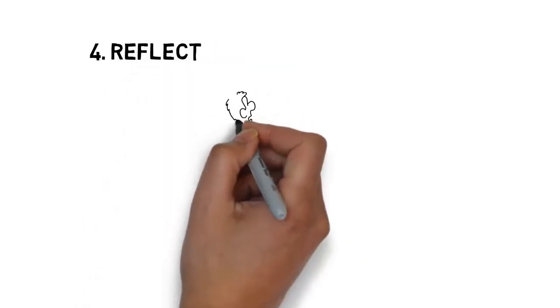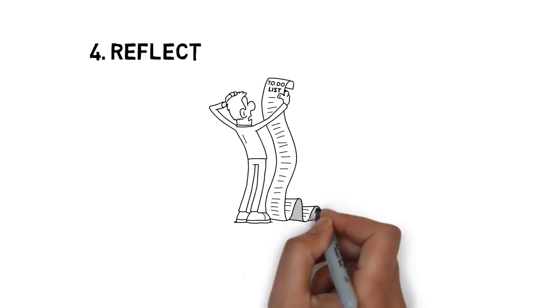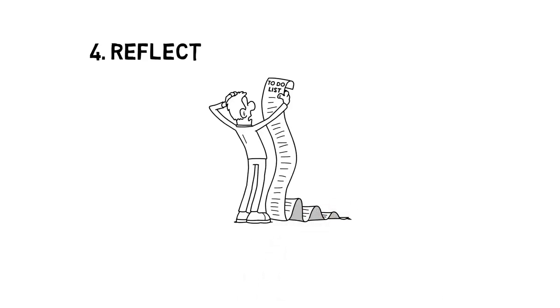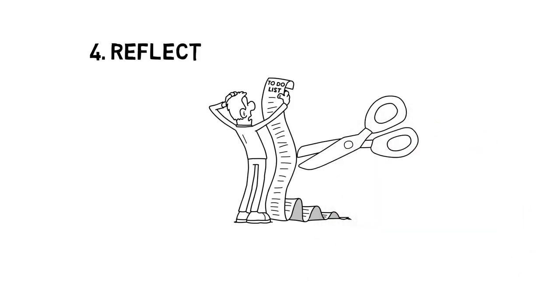4. Reflect: Look at your to-do list and keep track of your next action. You should be able to pick something and do it right away. If you're not able to do so, try to break that point into smaller tasks.